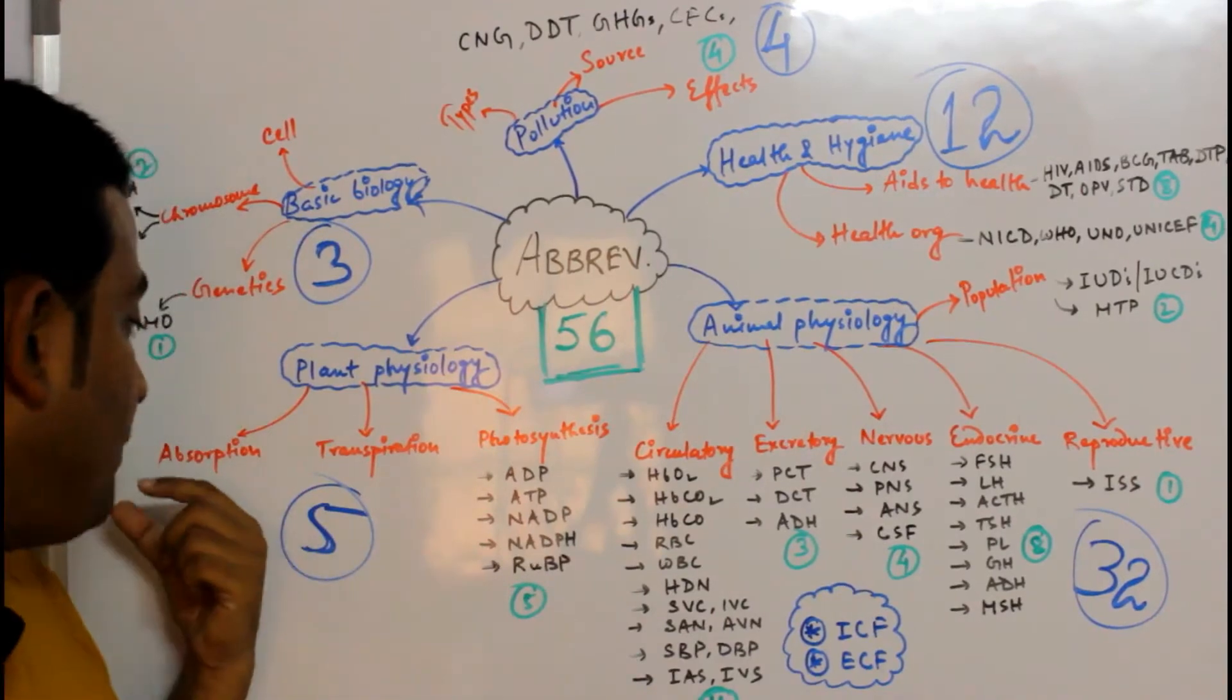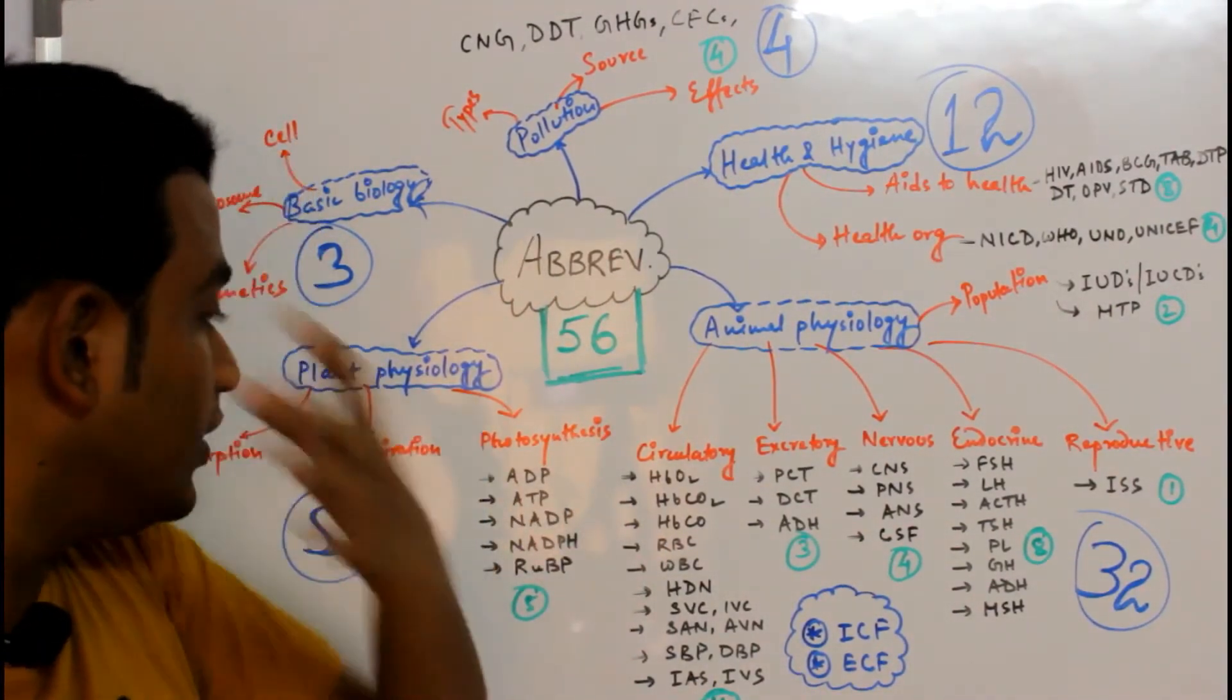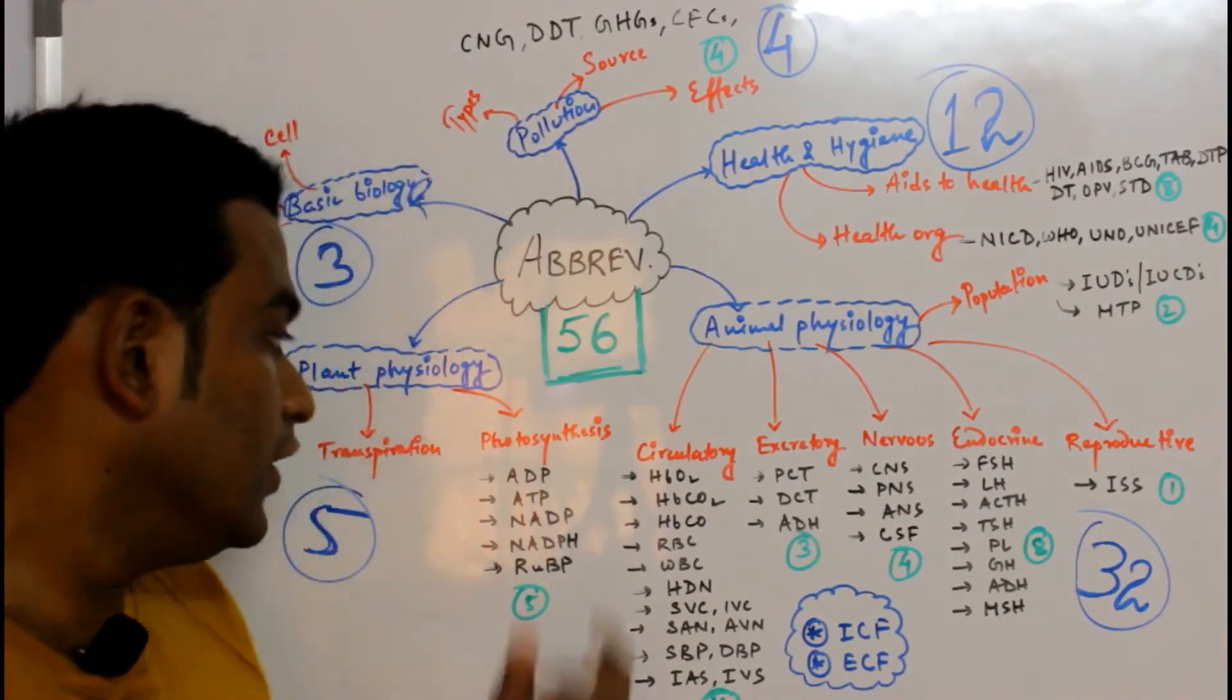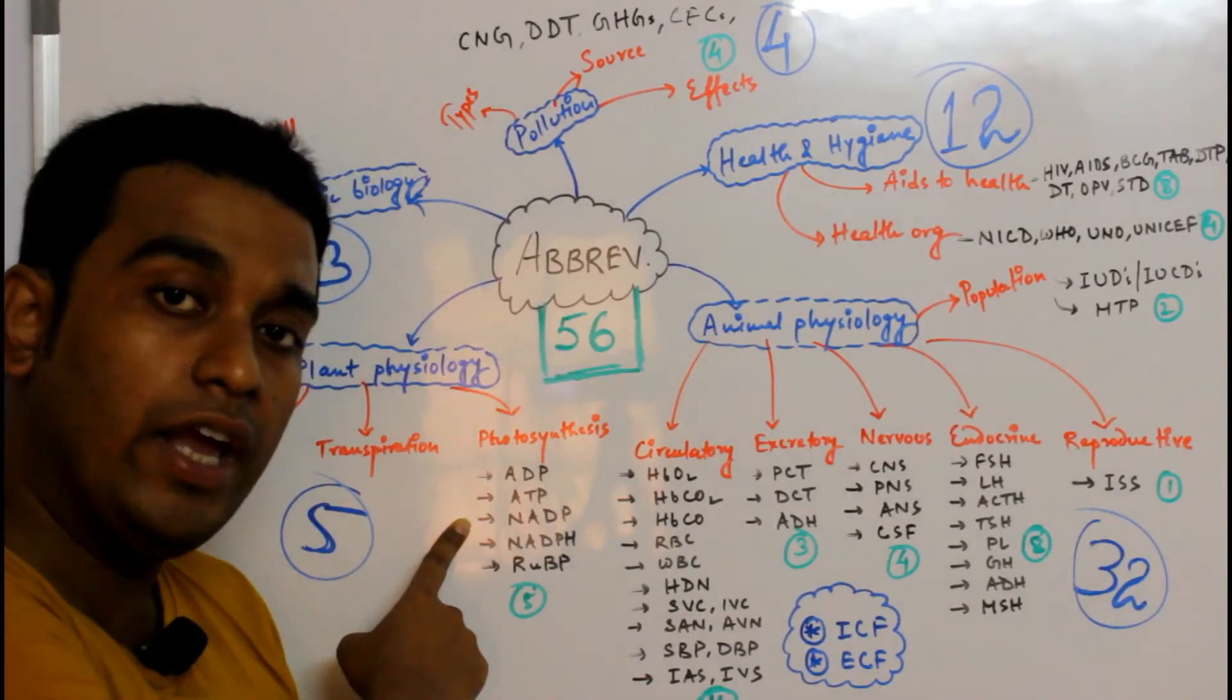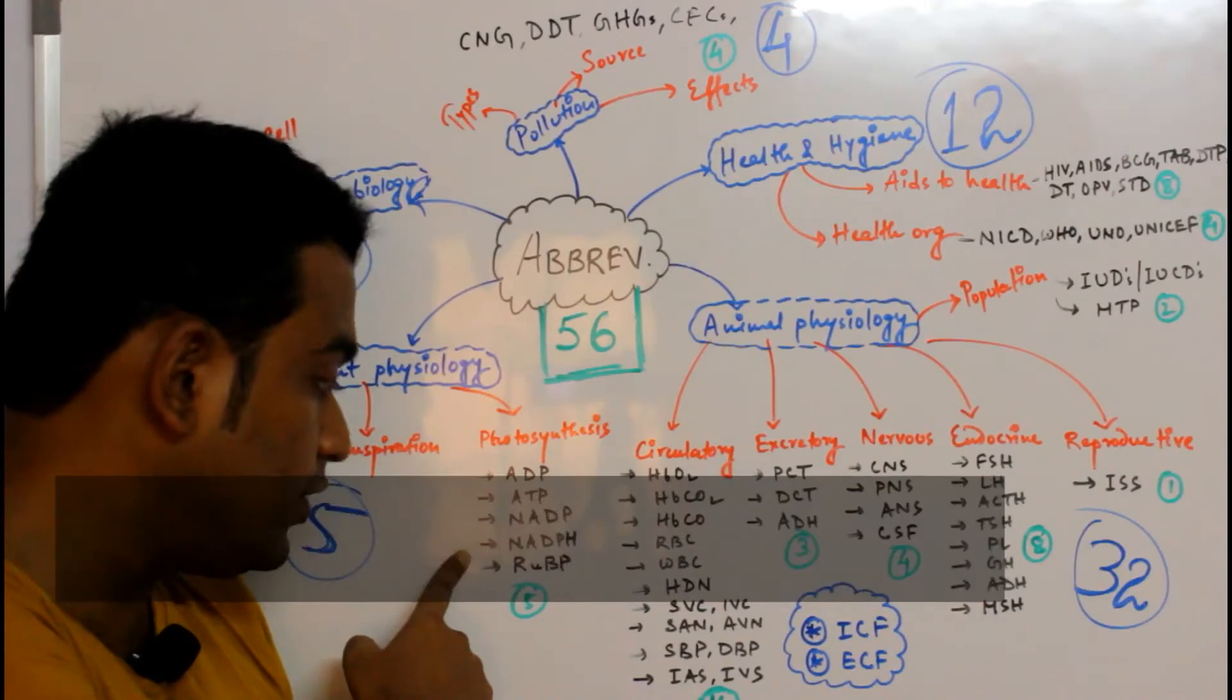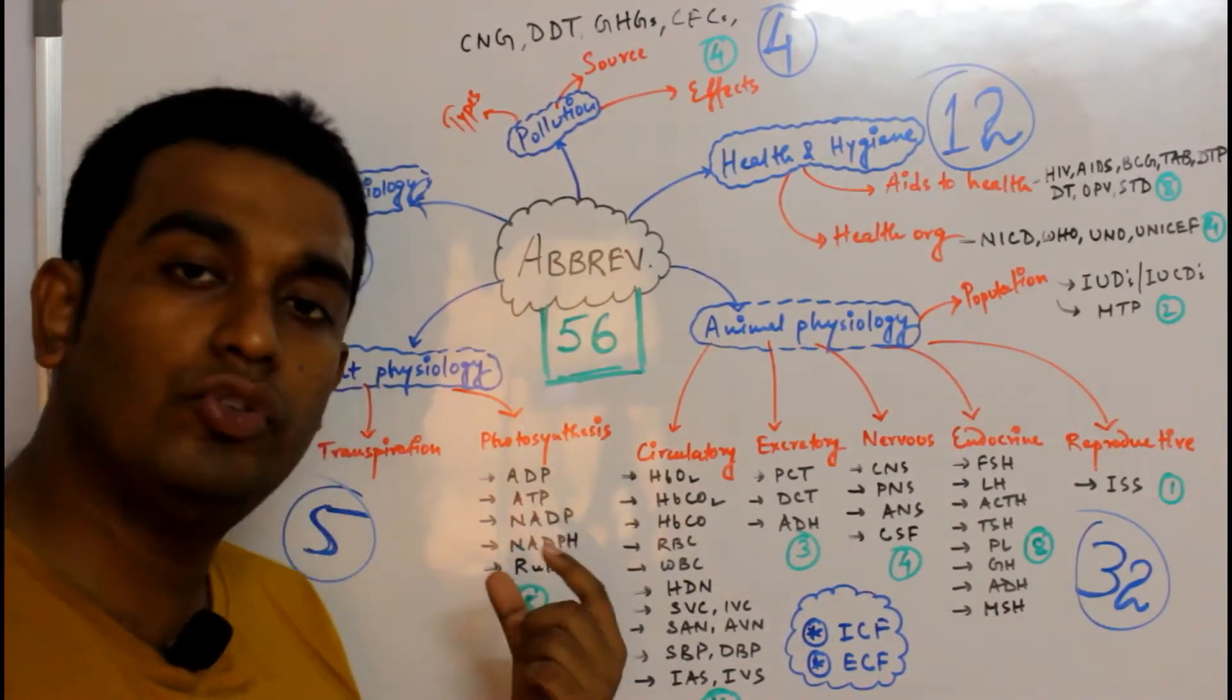Let's move towards Plant Physiology. In photosynthesis, I have got a number of abbreviations: ADP (Adenosine Diphosphate), ATP (Adenosine Triphosphate), NADP (Nicotinamide Adenine Dinucleotide Phosphate), NADPH (Reduced Nicotinamide Adenine Dinucleotide Phosphate), and RUBP (Ribulose Bisphosphate or Ribulose Biphosphate).